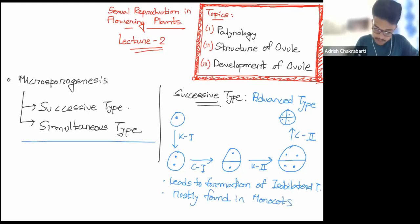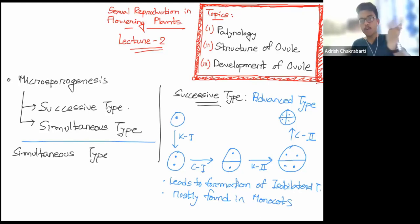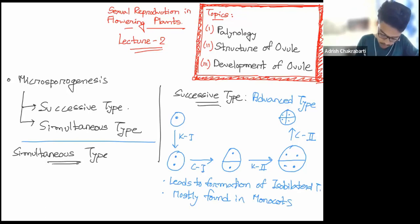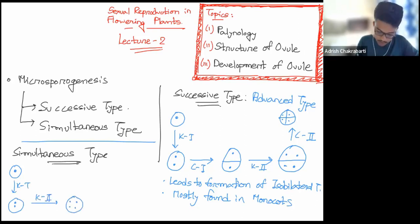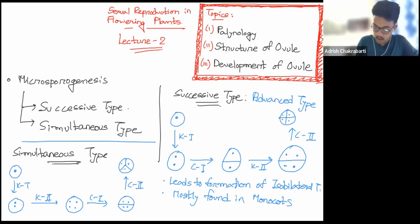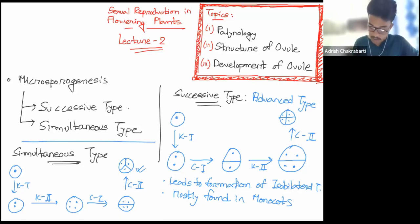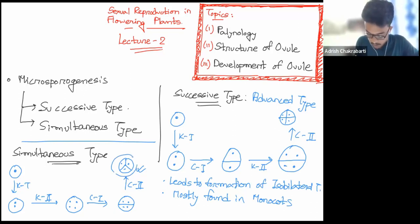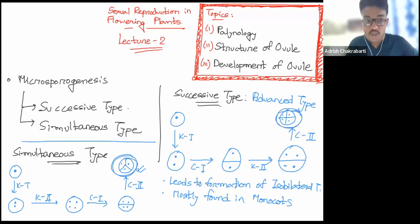It is observed mostly in monocots. Next is the simultaneous type. In the simultaneous type, the order is: karyokinesis 1, karyokinesis 2, then cytokinesis 1, cytokinesis 2. The final tetrad formed in the simultaneous type is not an isobilateral tetrad — in this case we observe a tetrahedral tetrad. That's the difference to keep in mind: simultaneous type leads to a tetrahedral tetrad and is mostly found in dicots.